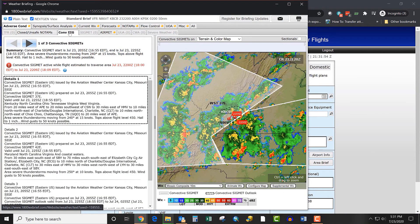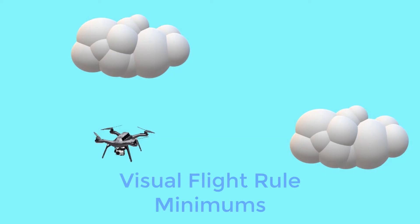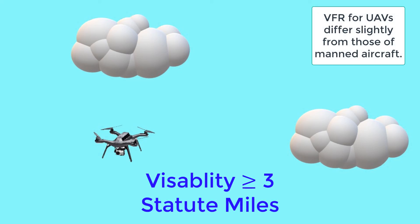After we've checked the NOTAMs, we need to check the weather. Aside from the pilot and the UAV itself, weather will have the largest impact on safety and performance of our flight. The most basic requirement is that under Part 107, we have to have Visual Flight Rule, or VFR, conditions to fly. VFR conditions are a minimum of 3 statute miles visibility, while remaining clear of clouds by at least 1,000 feet above, 2,000 feet horizontally, and 500 feet below.